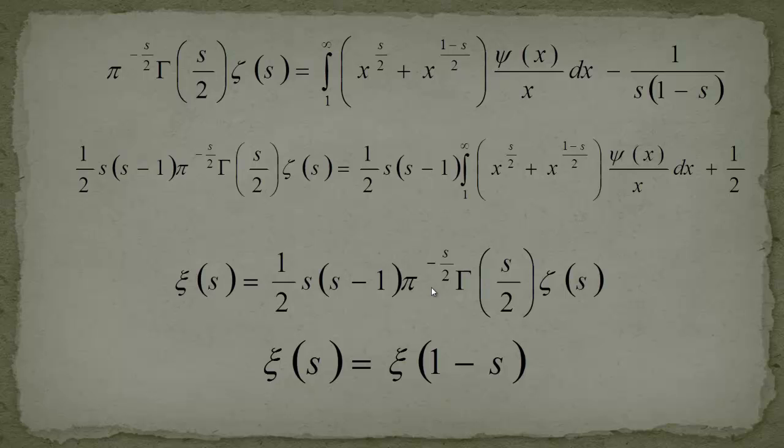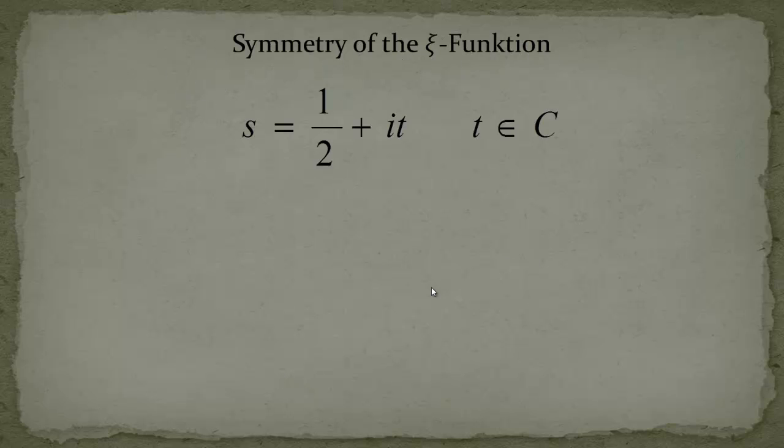Now if we go ahead and try to look at the symmetry of this function, what Riemann did was again he substituted here another value of s equals 1/2 plus it, introducing a t which is complex. This is a very interesting part because now if you have a look at this, it seems like the real part is 1/2 plus it so t should be real. But actually we want to have every kind of complex value so Riemann allowed t to be complex.